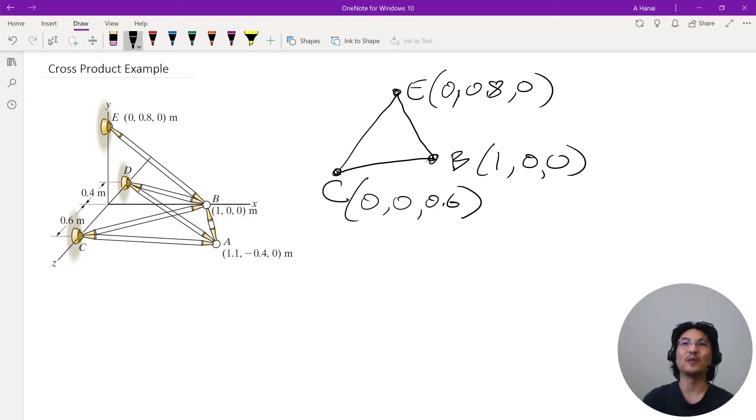We want to find a unit vector normal to the plane. So all you need to do is define any two vectors in the plane, any two, and then cross them. And then that cross product, guaranteed, is normal to those two vectors.